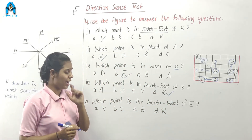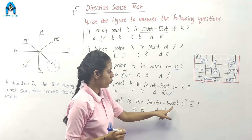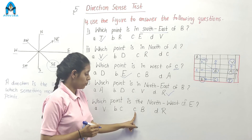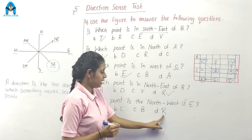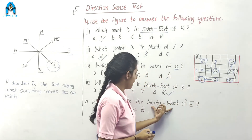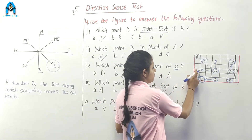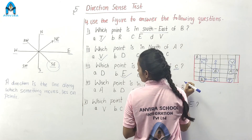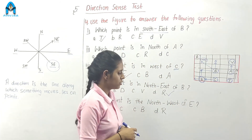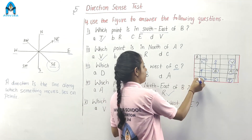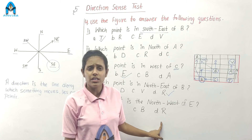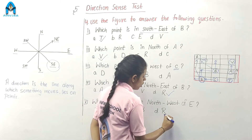Question 5: Which point is in the northwest of E? Here is E. North is here, and west is here. The letter that comes in the northwest of E is R. Our correct option is option D.